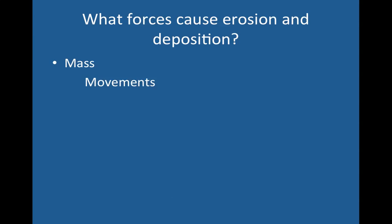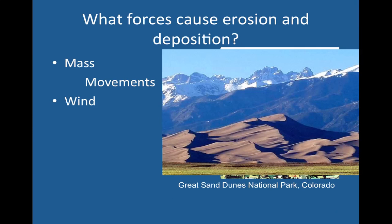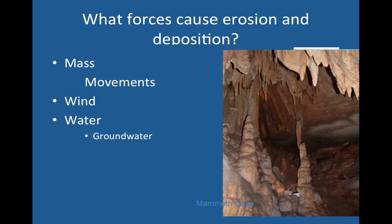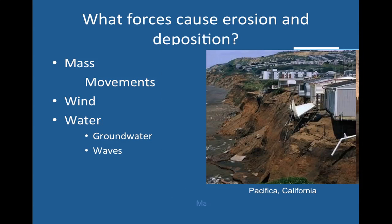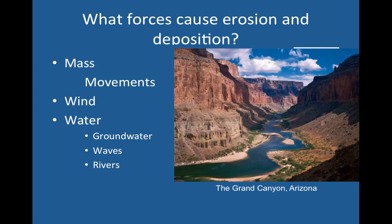So what forces cause these? The types you're going to learn about are mass movements, wind, and water, which comes in many different forms. We have groundwater, which as we've seen during weathering can make caves. Then we have wave erosion and river erosion on both small and large scales. And there's frozen water in the form of glaciers, which you've already been introduced to, and we're going to spend probably the most time on glacier erosion.